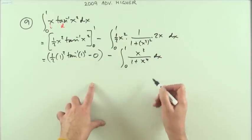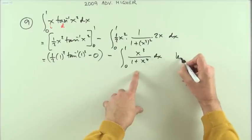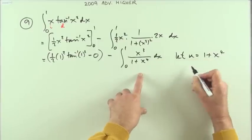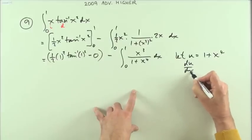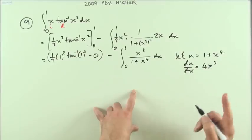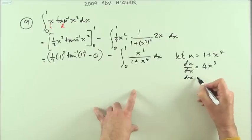So the alternative, if you didn't recognize you could do that by inspection, would be to go through the process of substitution. So substitution would be this: let u be the nasty, that'll be the 1 plus x to the 4, in which case du by dx is going to be 4x cubed.